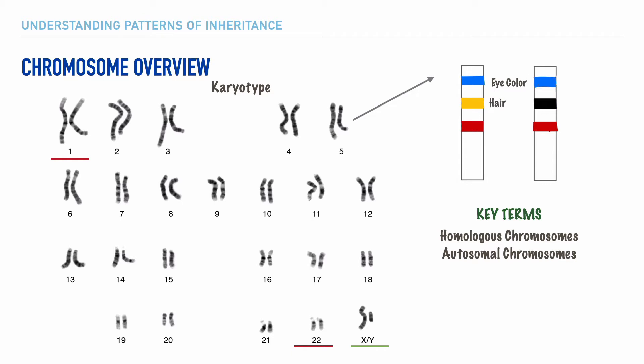On chromosome pair number 5, one chromosome is donated by the father and the other by the mother. We see here that both the father and mother have a gene for blue eyes, so this gene is homozygous — meaning that they have the same form. We oftentimes use the term allele to refer to various forms of a given gene. The individual whose karyotype we're examining would definitively have blue eyes. For hair color, the allele is different — one is blonde and the other is black. When we have two different alleles for the same gene, we say that this is heterozygous.